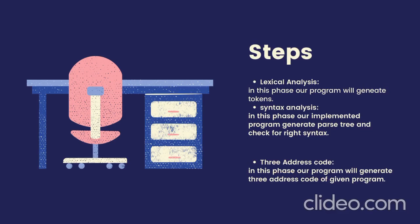Here are the steps for our project. In the first step there is lexical analysis. In this phase our project will generate tokens — it will read character streams and generate different types of tokens.